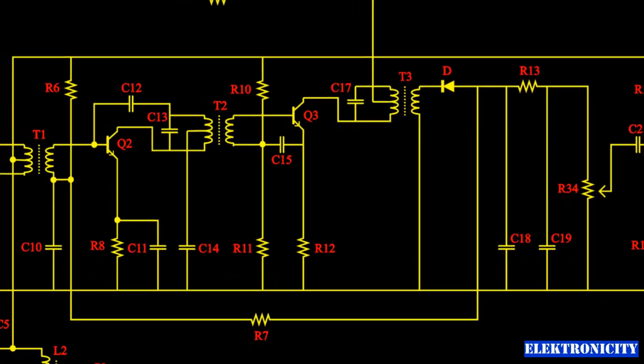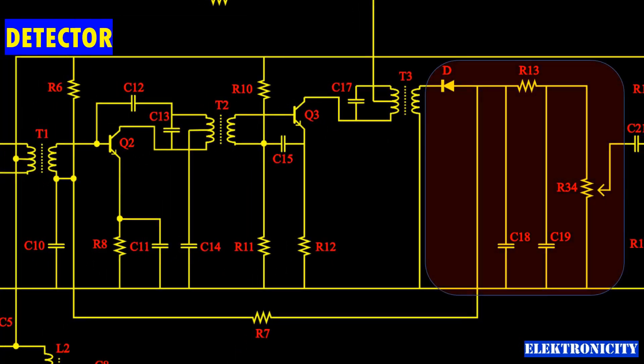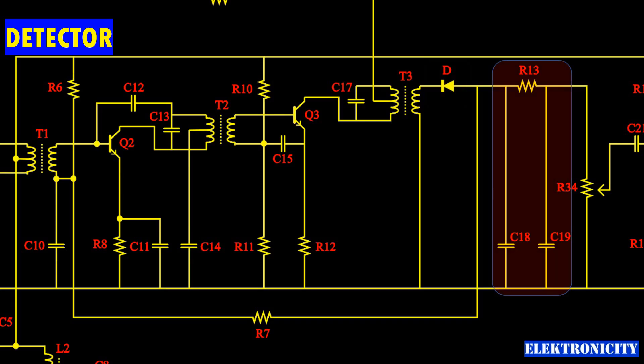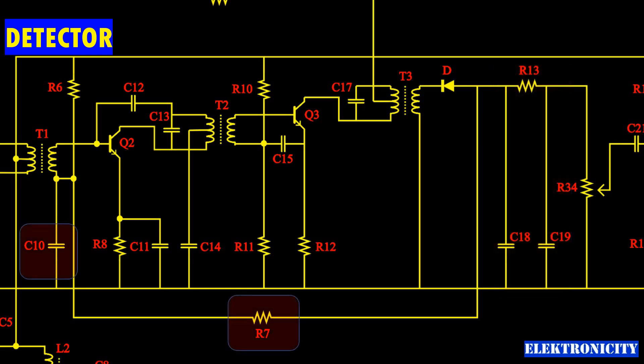Detector: the detector demodulates the IF signal using germanium diodes, chosen for their low forward voltage compared to silicon diodes. R13, C18, and C19 create a pi topology low-pass audio filter.